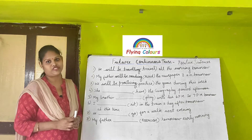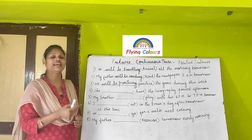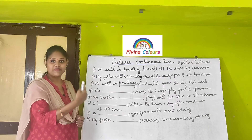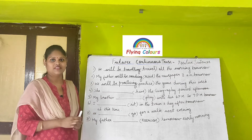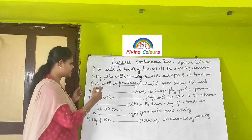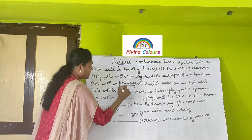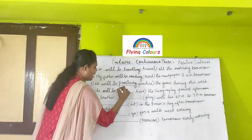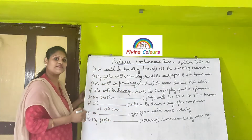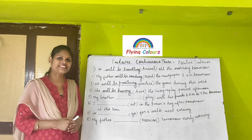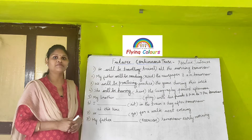Next sentence: 'She ___ have the geography period this afternoon.' The action is not completed — it is continuing. So: 'She will be having the geography period this afternoon.' Here, 'she' is the subject, 'will' is the helping verb, 'be' is from the formula, and 'having' — H-A-V-I-N-G — is the present participle.